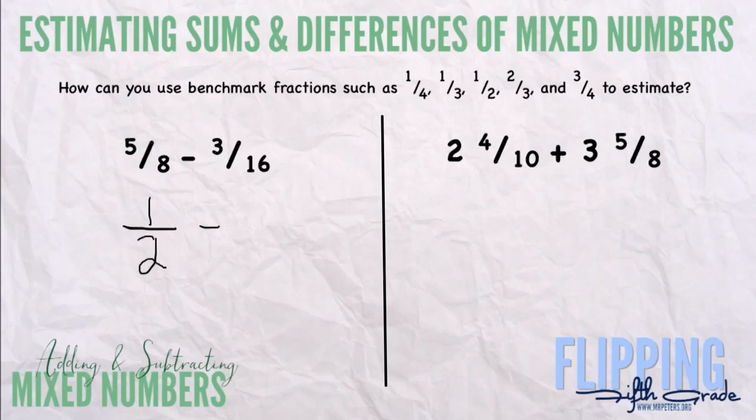Now with three-sixteenths, that's closest to a fourth because four-sixteenths is a fourth. We find our common denominators, which is four, so it's two-fourths minus one-fourth equals one-fourth.